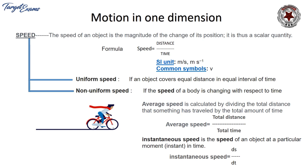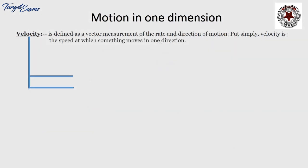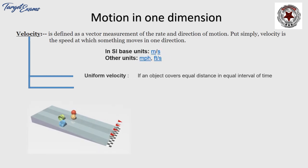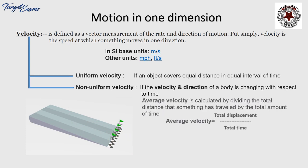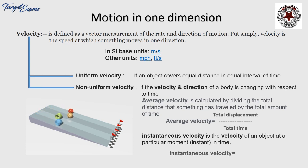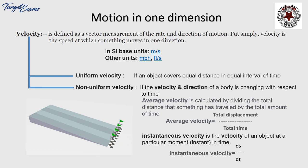Velocity is defined as the vector measurement of the rate of change of direction of motion. Simply put, velocity is the speed at which something moves in one direction. Its SI unit is the same as speed — meter per second. Velocity is categorized into uniform velocity, where the object covers equal distance in equivalent time, and non-uniform velocity, where direction or speed changes with time. Non-uniform velocity is further divided into average velocity (total displacement / total time) and instantaneous velocity (dS/dt).